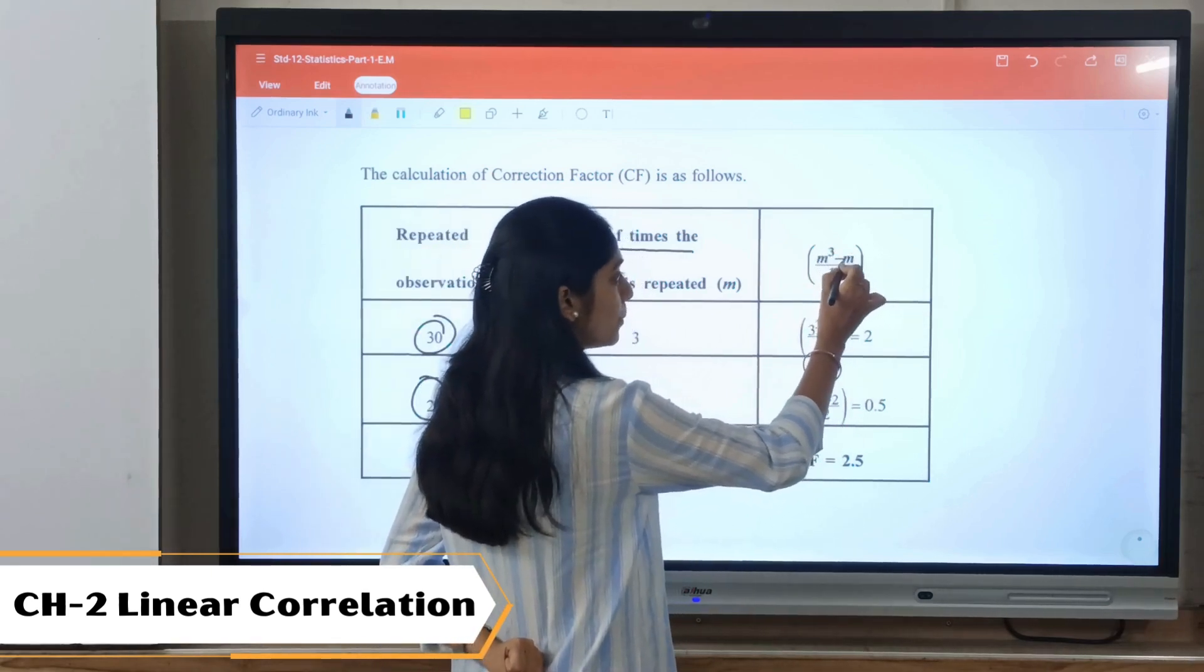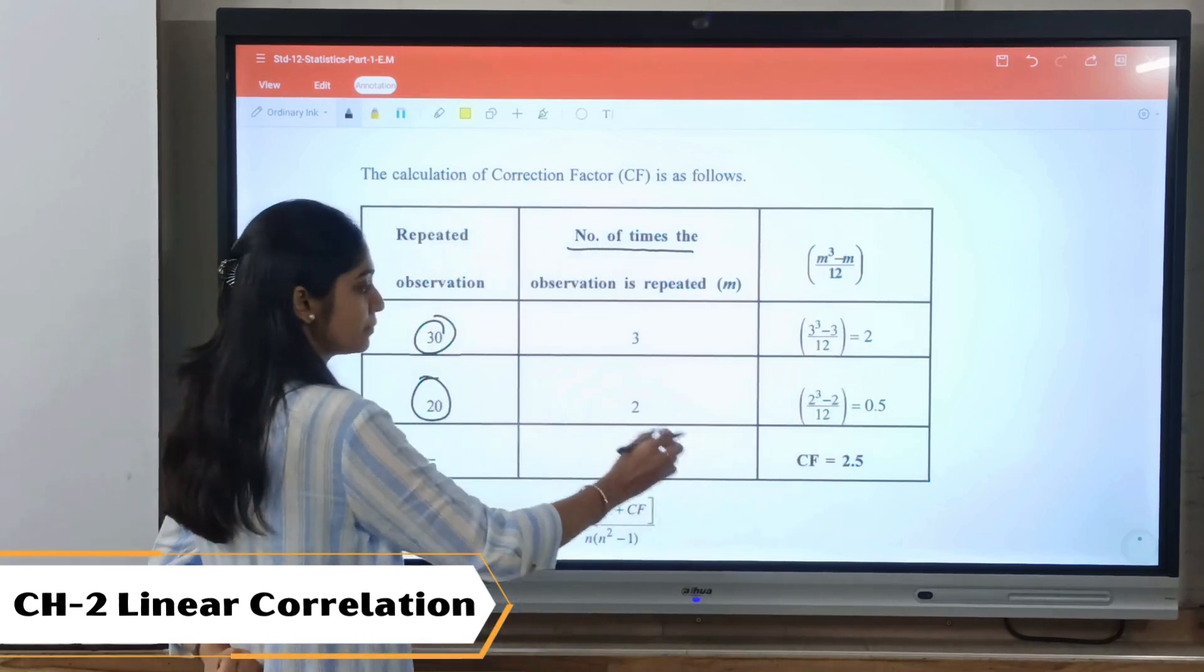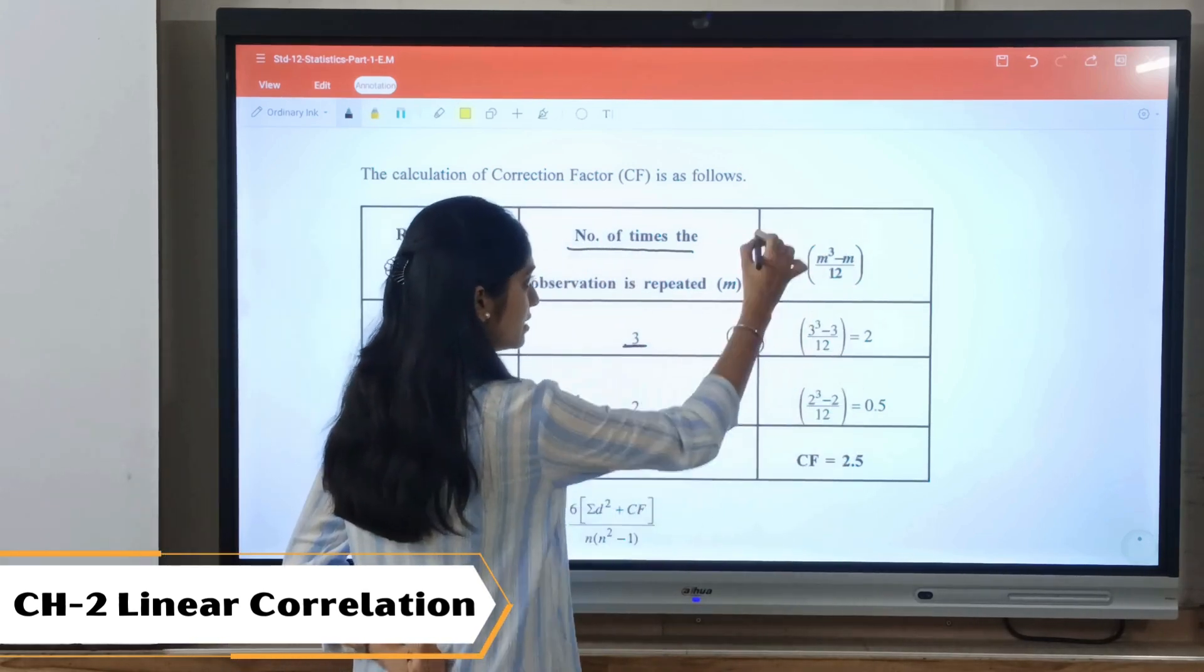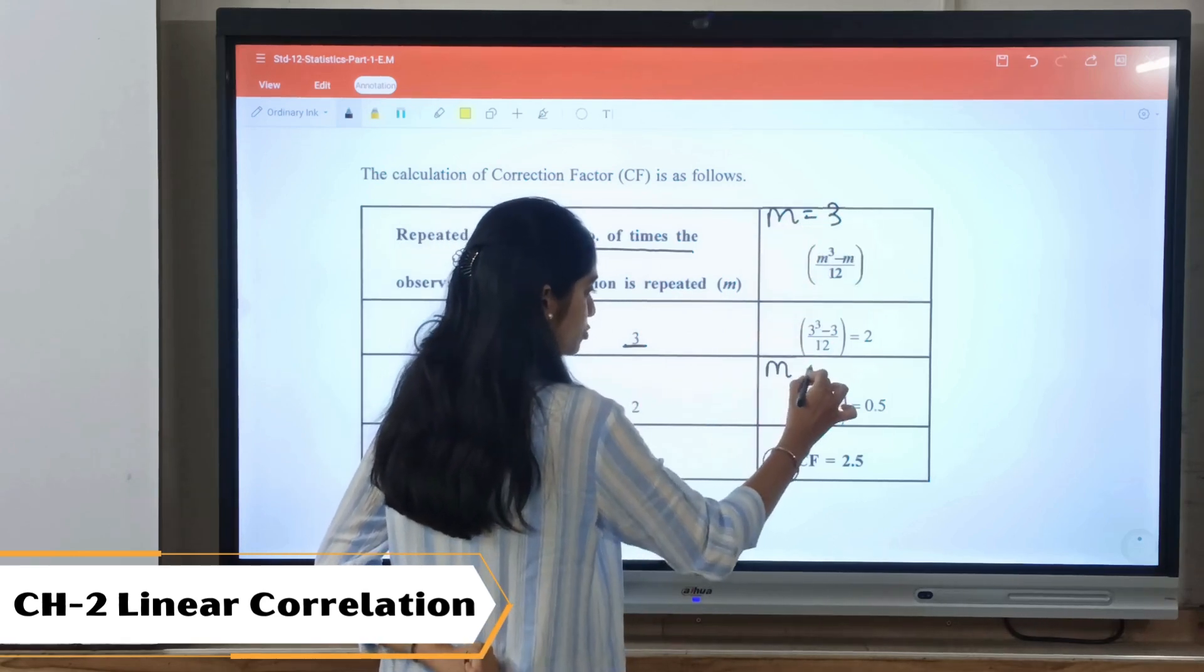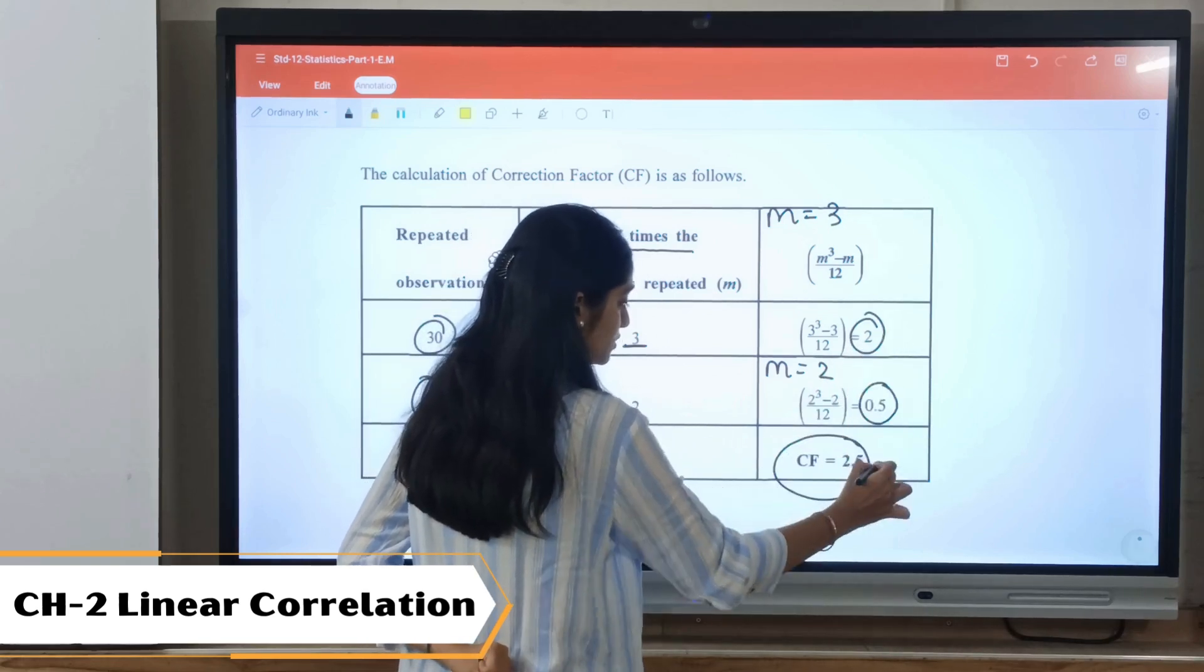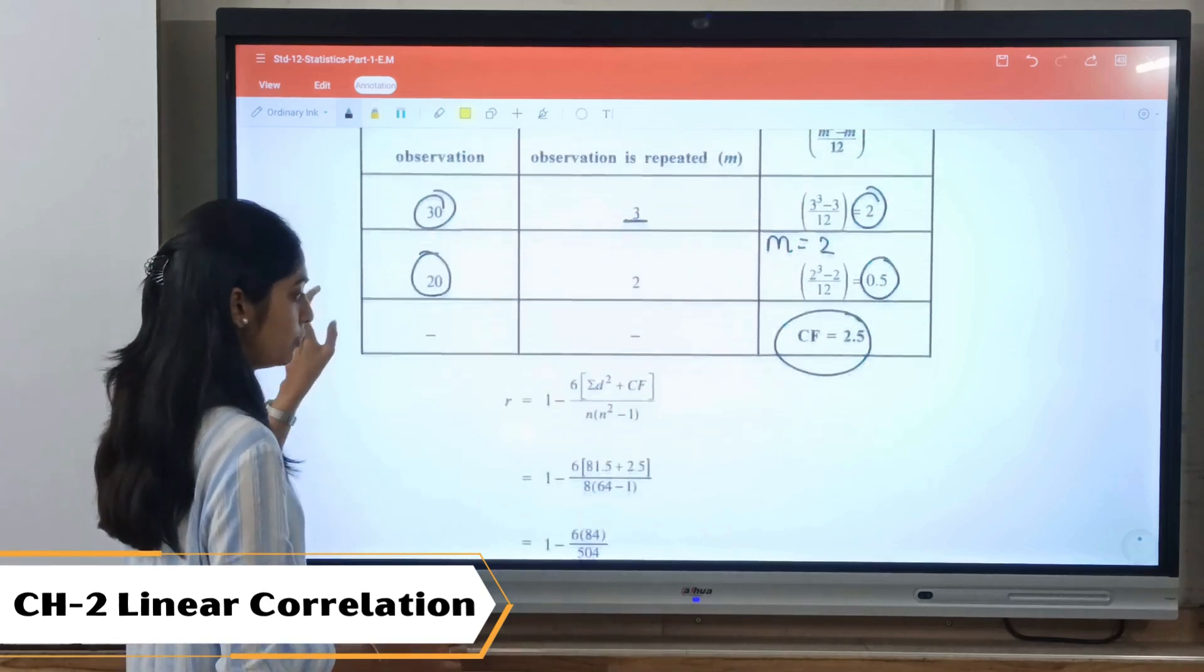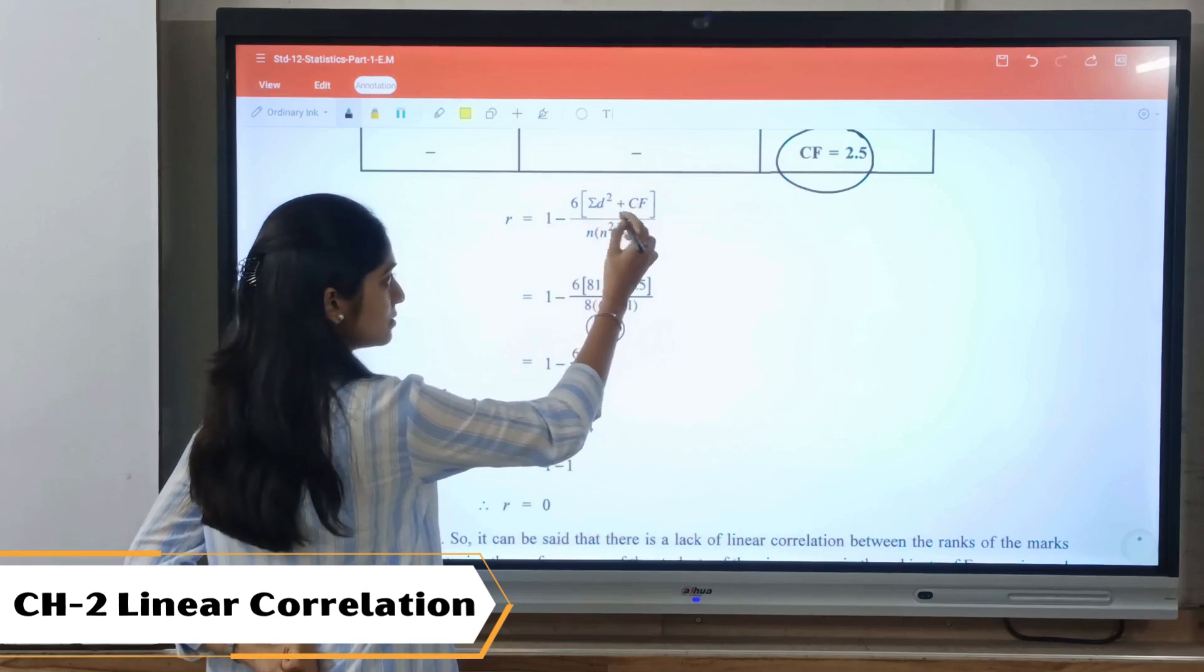Then using this formula: m cube minus m, divided by 12, we need to find out cf. Now here m is equal to 3, and here m is equal to 2. So using the formula, we got the total of this as 2.5. So here in the formula, instead of six sigma d square, we are just supposed to add cf.